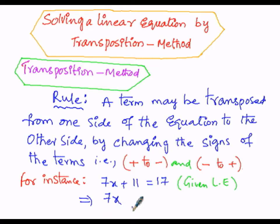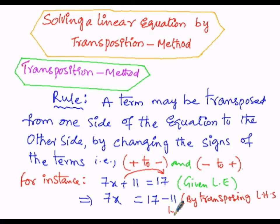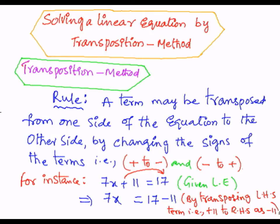I write 7x as it is on the left-hand side, and equals to 17 on the right-hand side. When we transpose +11 from LHS to RHS, its sign will be changed. So 11, which is positive on the LHS, becomes minus 11 when it moves to the right-hand side. We got this step by transposing the LHS term: +11 to RHS becomes -11. Based on this rule, I have transposed 11 from the left-hand side to the right-hand side with its sign changed to minus 11.